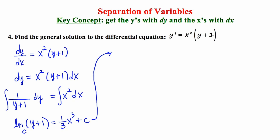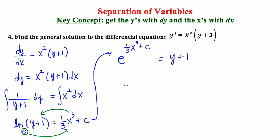Now I'm going to do this highly technical maneuver called a swing, where I start here and say e to this whole power is equal to this whole thing. So e to the one third x cubed plus c is equal to y plus one. I'm going to flip-flop the right and left hand sides — I feel more comfortable when the y is on the left. So y plus one is equal to e to the one third x cubed times e to the c.